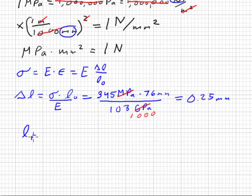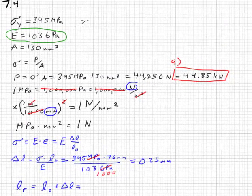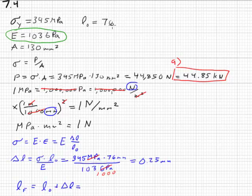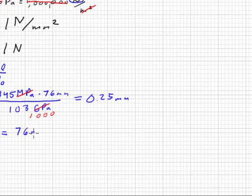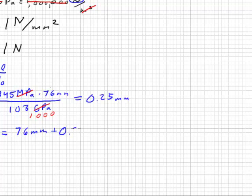Finally, our final length is equal to our original length plus our change in length. And it is given that our original length equals 76 millimeters. So, we take 76 millimeters plus 0.25 millimeters equals 76.25 millimeters. And that is our final answer.